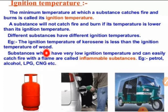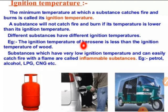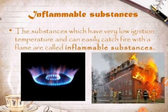For example, the ignition temperature of kerosene is lower than that of wood. When we burn both, kerosene burns quickly and easily because its ignition temperature is low, while wood takes more time because its ignition temperature is high. Inflammable substances have low ignition temperatures and can easily catch fire. Examples include LPG, kerosene, CNG, and crackers.